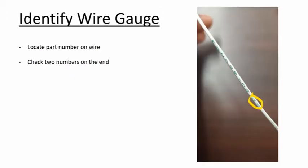To begin your splicing job, first you must identify the wire size. You can do this by checking the last two numbers on the wire.